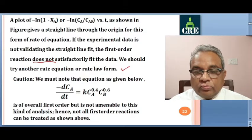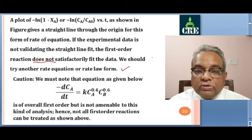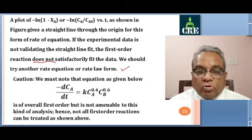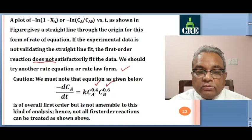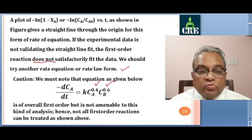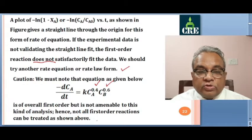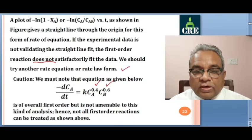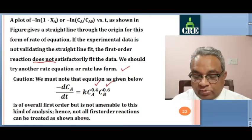Not all first order reactions will follow this integrated form of rate equation. It is only valid for minus RA equals kCA form. For example, if minus RA equals k times CA raised to 0.4 times CB raised to 0.6, then the order is 0.4 and 0.6 with respect to A and B respectively. Overall order of the reaction is 1, but it is not amenable to the first order analysis shown above. So only reactions of the form minus RA equals kCA can be treated as shown.